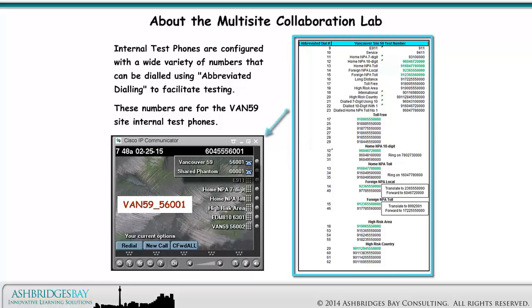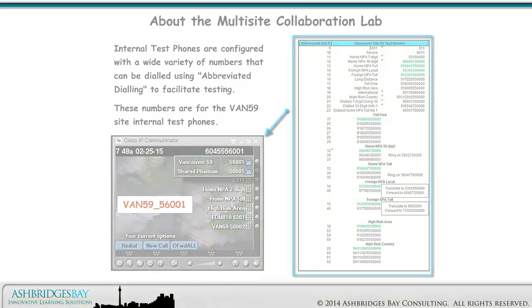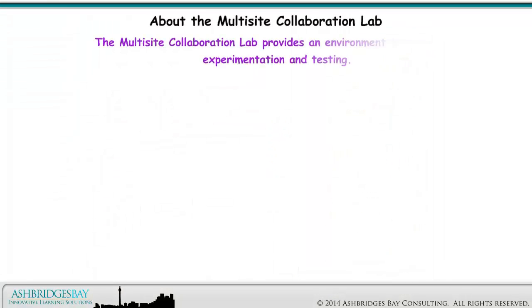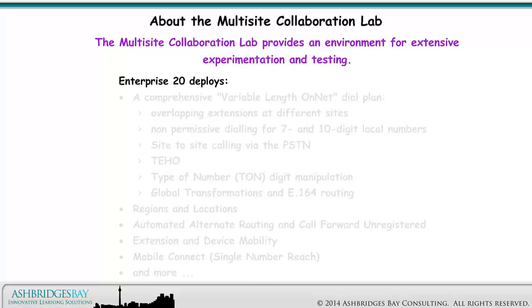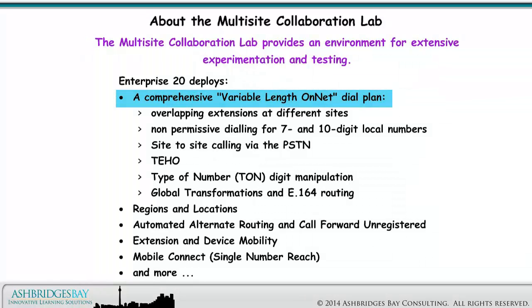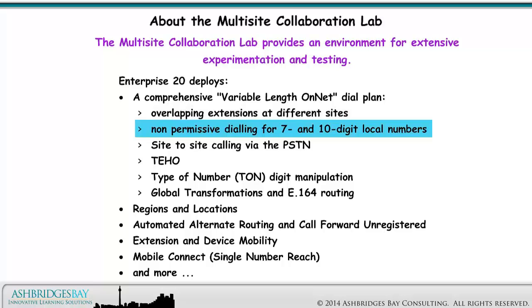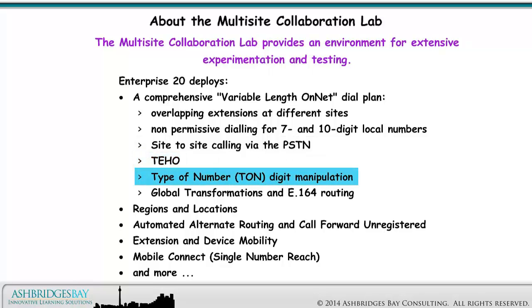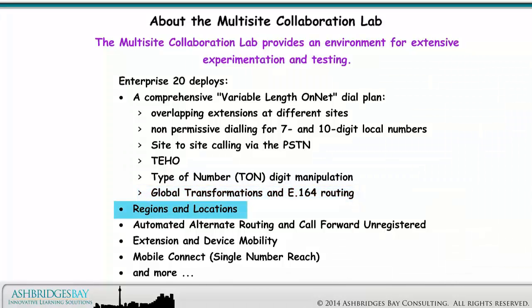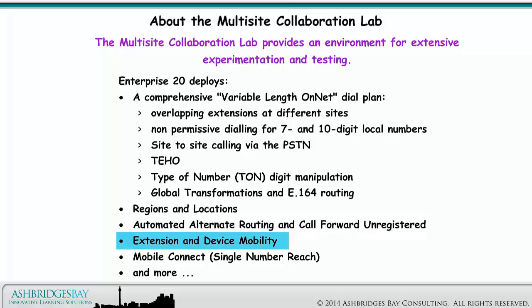Internal test phones are configured with a wide variety of numbers that can be dialed using abbreviated dialing to facilitate testing. These numbers are for the Vancouver 59 site internal test phones. The Multi-Site Collaboration Lab provides an environment for extensive experimentation and testing. Enterprise 20 deploys a comprehensive variable length on-net dial plan, overlapping extensions at different sites, non-permissive dialing for 7 and 10 digit local numbers, site-to-site calling via the PSTN, TAHO, type of number digit manipulation, global transformations and E.164 routing, regions and locations, automated alternate routing and call forward unregistered, extension and device mobility, mobile connect or single number reach, and more.